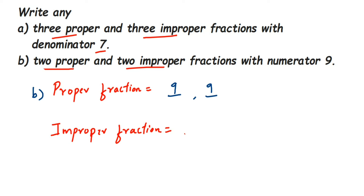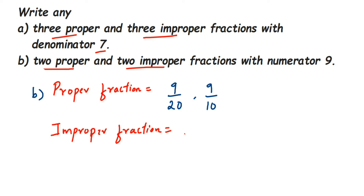For proper fractions, the numerator must be smaller than the denominator. So the denominator should be greater than 9. You can take any number greater than 9 — let me take 20 and 10. So 9/20 and 9/10 are our two proper fractions.